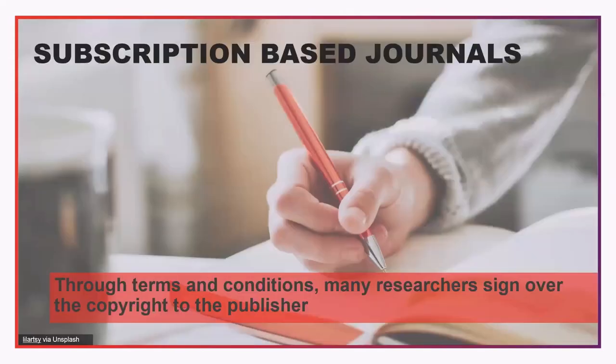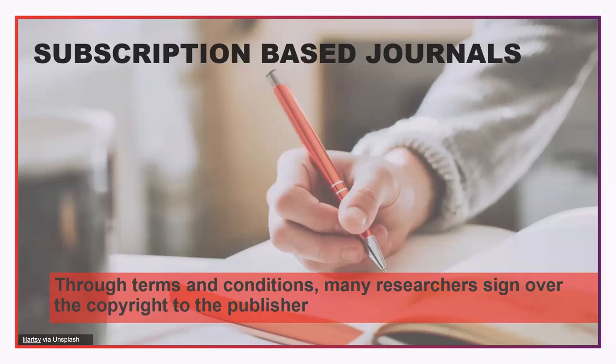A subscription-based journal is your most traditional academic publication. You write a journal article and publish it in a journal where all content is behind a paywall, meaning anyone who wants to read it either needs to be affiliated with an institution that subscribes to that journal — logging in with their university credentials — or pay a fee to access individual papers. From a copyright point of view, when publishing in a subscription-based journal, through the copyright transfer agreement you would sign over the copyright to the publisher.